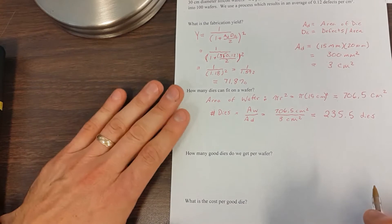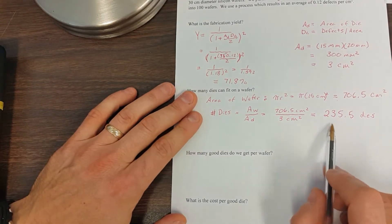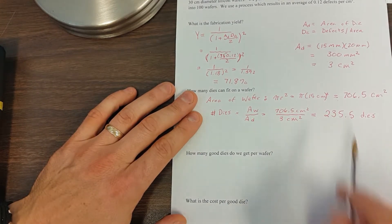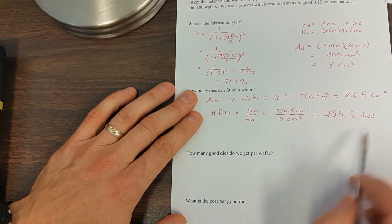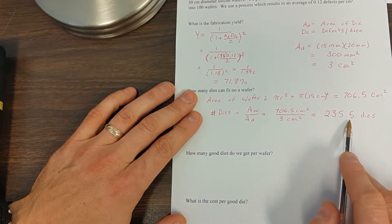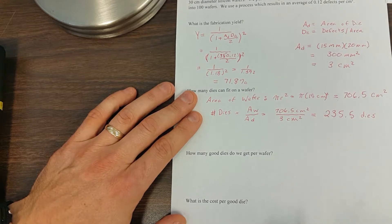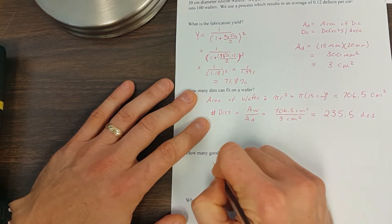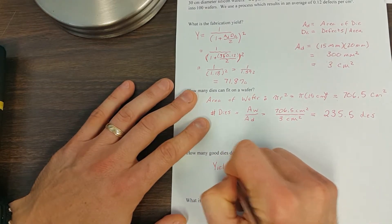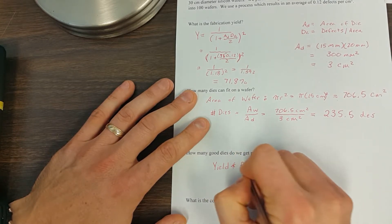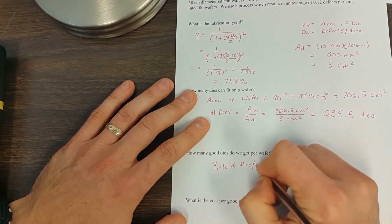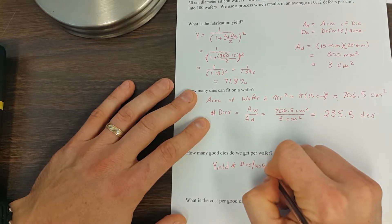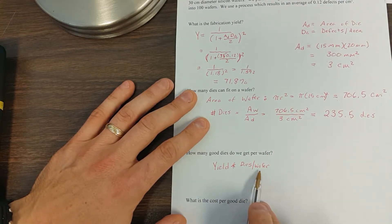So we ask, how many good dies do we get per wafer? Well, we tried to make 235.5 dies. And yes, I understand you can't make half of a die, but I'm carrying through the significant figures here. We don't need to round off, because we're using an approximation to begin with. So how many good dies do we get? Well, then this is just going to be the yield times the dies per wafer.